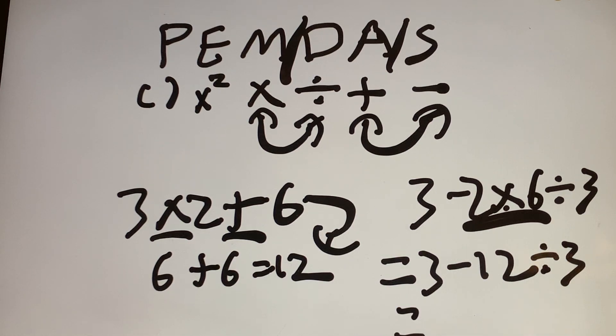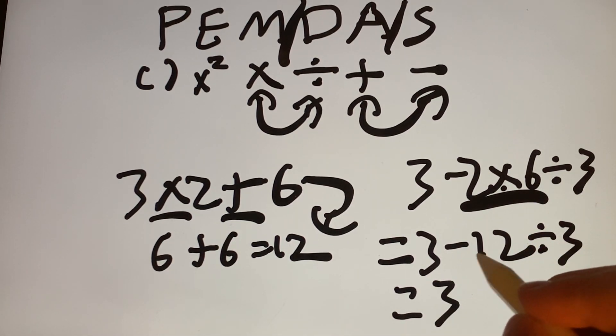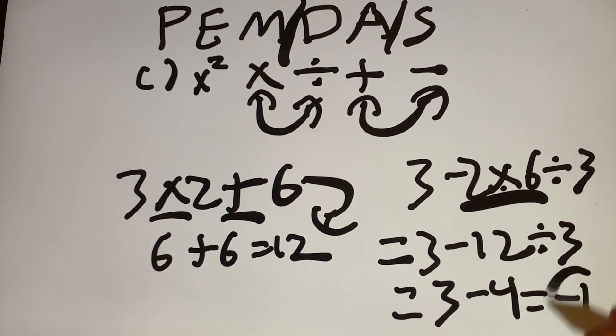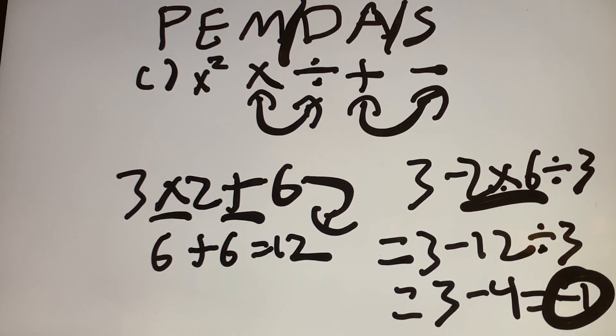So that's equal to 3 minus 12 or 3 minus negative 12 divided by 3, which gives us negative 4. That's going to give us 3 minus 4, which is negative 1. So this expression, 3 minus 2 times 6 divided by 3, is going to give us negative 1.